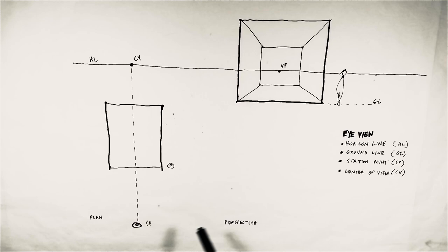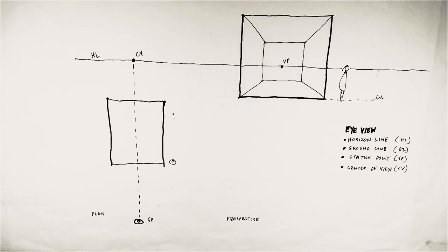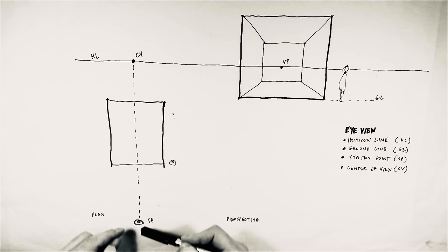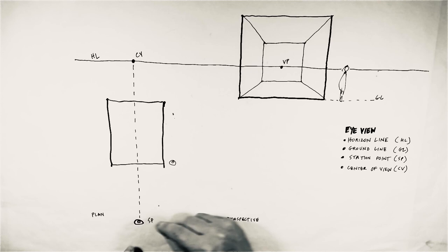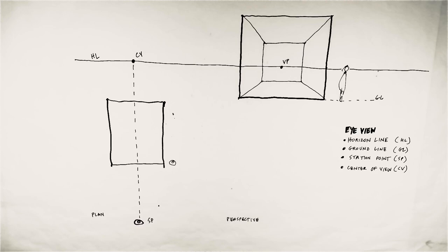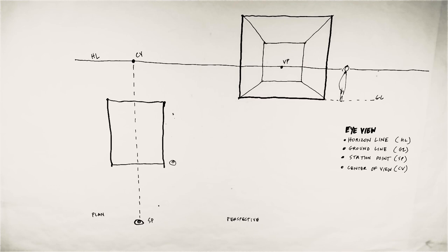We're going to talk about why that ground line's relationship to the horizon line is important. You can see here there's an important distance of that ground line from the horizon line. We're also going to talk about station point. The station point is where you happen to be — you can imagine it is where you're viewing this drawing from. Your eye view is really the station point. The closer or further away you place that station point to the object will change how large that drawing is on the page, or how close you are to it or how far away.